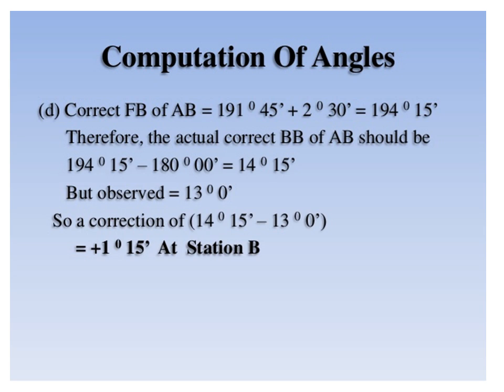The observed back bearing of AB was 13 degrees. Here the corrected bearing is more than the observed bearing, therefore the correction is positive. So 14 degrees 15 minutes minus 13 degrees gives plus 1 degree 15 minutes, and this correction is to be applied at station B.